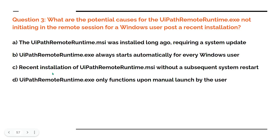Option C — recent installation of UiPath Remote Runtime dot MSI without a subsequent system restart. Remember: after you install UiPath Remote Runtime dot MSI you must restart the system. Option D — UiPath Remote Runtime dot exe only functions upon manual launch by the user.